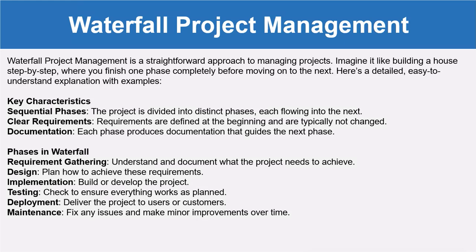The phases in waterfall are: first, requirement gathering — we understand and document what the project needs to achieve. Then the design phase — we plan how to achieve those requirements. Then implementation — we build or develop the project. Then testing — we ensure everything works as planned and is working properly. Then deployment — we deliver the project to users or customers. Finally, maintenance — we fix any issues and make minor improvements over time.